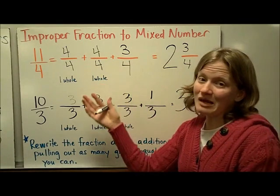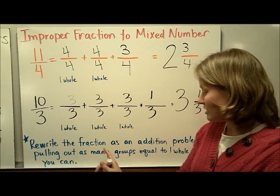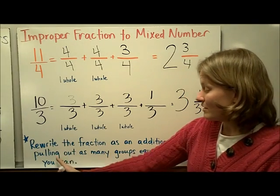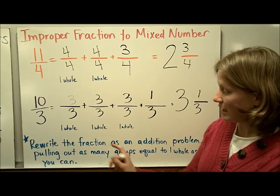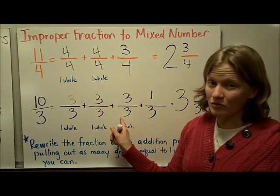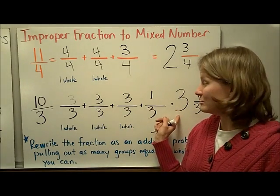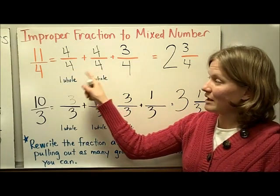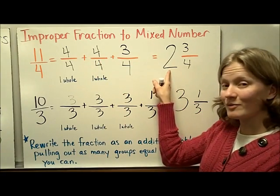To summarize the steps I was following: rewrite the fraction as an addition problem by pulling out as many groups equal to 1 whole as you can. Here I was able to pull out 3 groups of 1 whole, which is why my whole number was 3. With 11 fourths I was able to pull out 2 groups equal to 1 whole, which is why my whole number was 2.